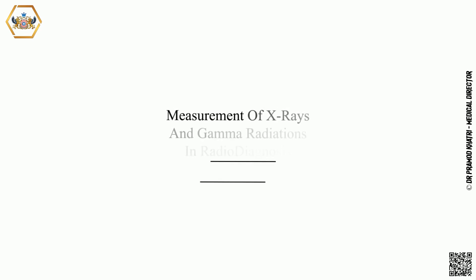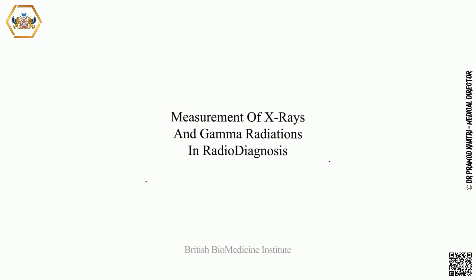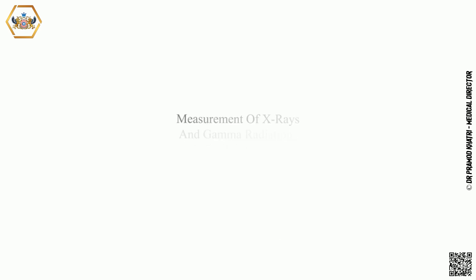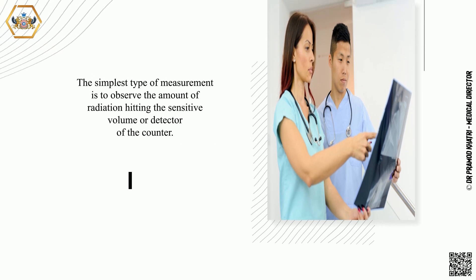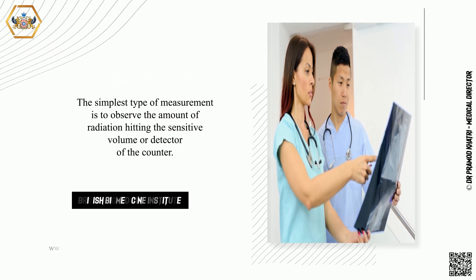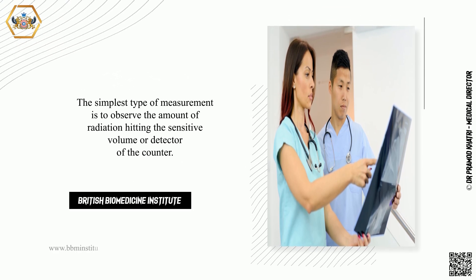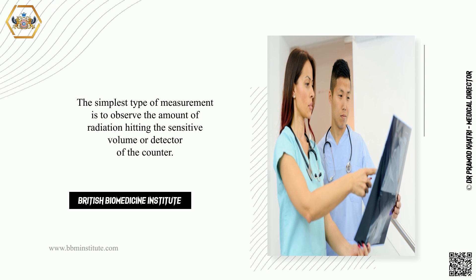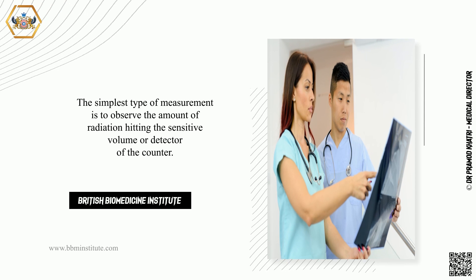Welcome to British Biomedicine Institute. Today we will explore the measurement of X-rays and gamma radiations and radio diagnosis. The simplest type of measurement is to observe the amount of radiation hitting the sensitive volume or detector of the counter.